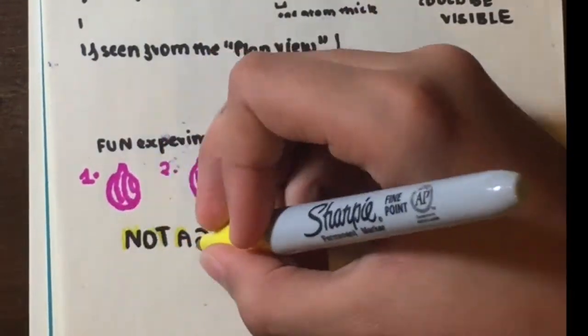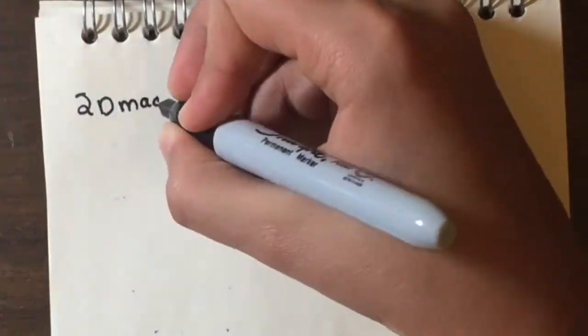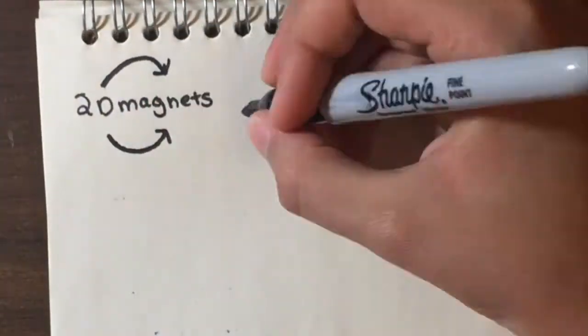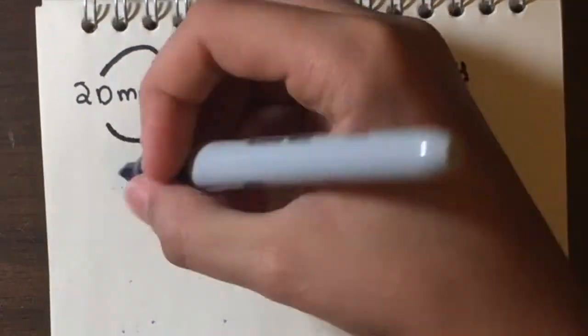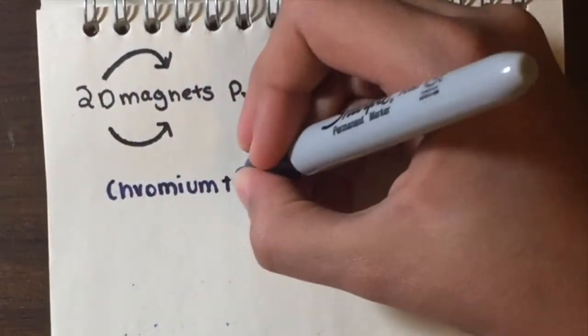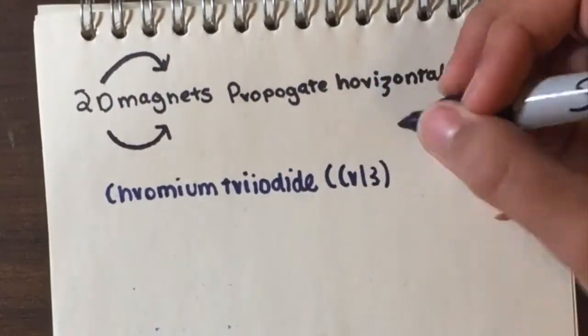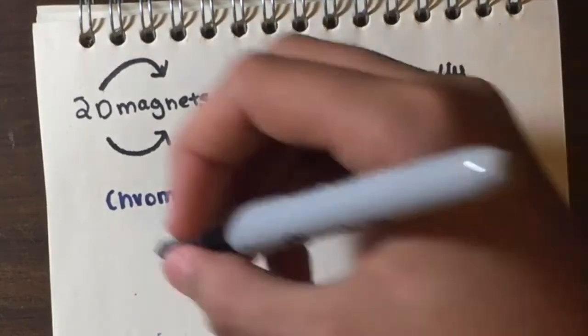2D magnets, unlike regular magnets, can propagate horizontally. The name of the substance the universities discovered is chromium triiodide, which retains magnetism by spinning clockwise and transferring electrons.